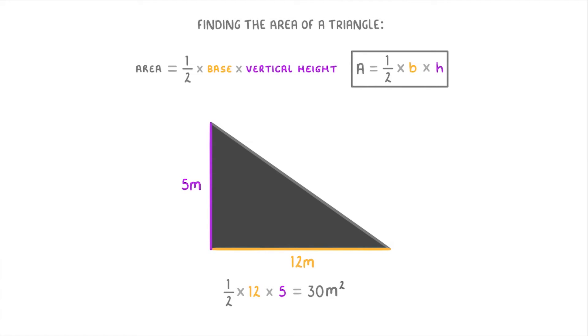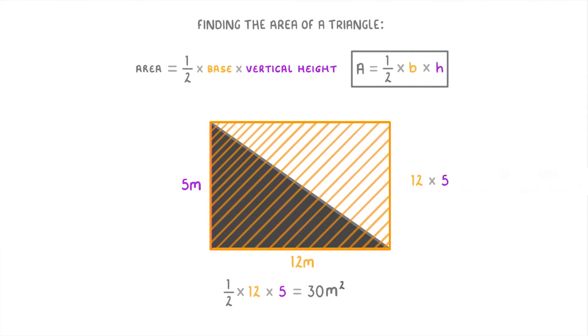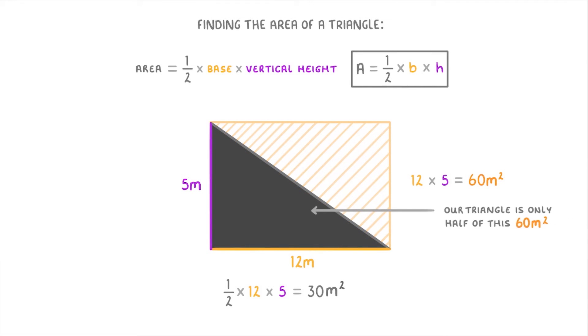Now to help you understand the equation a bit, the reason that we have to have the one-half part is that if we just multiplied the base and the height together we'd calculate the size of this rectangle instead which in this case would be 60 square meters. Our triangle though is only half of this area so we have to take that into account by multiplying our equation by one-half.